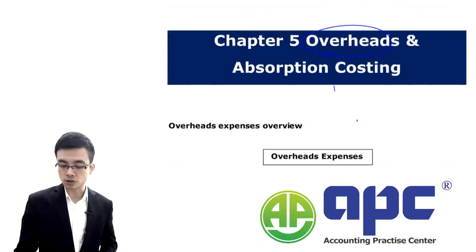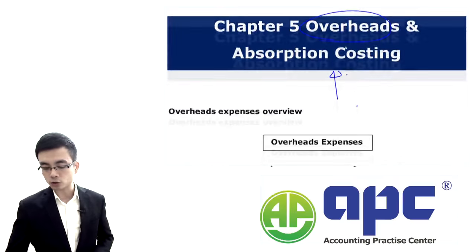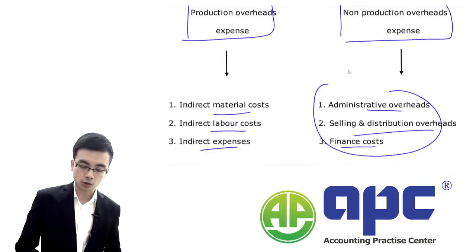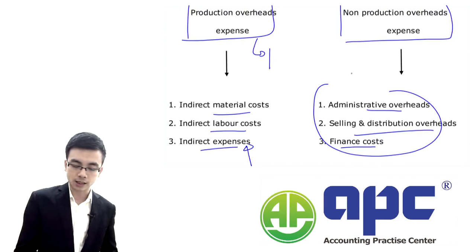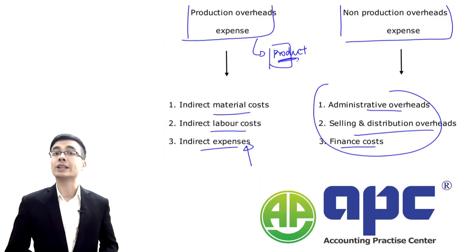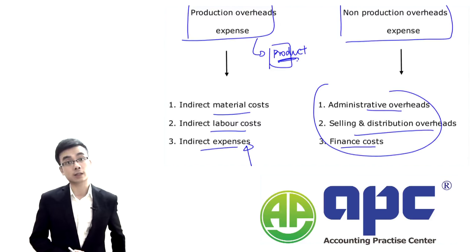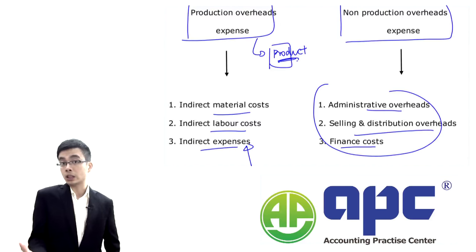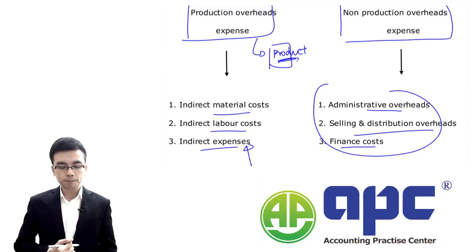Our aim is to use the absorption costing method to ensure that the production overhead expenses are charged into the final product — determining what costs the product will incur for those production overhead expenses. That's our objective, and we're going to use absorption costing to achieve it.